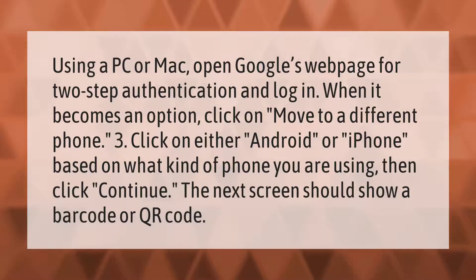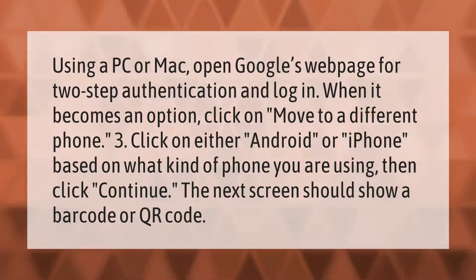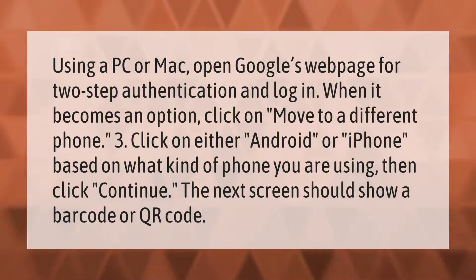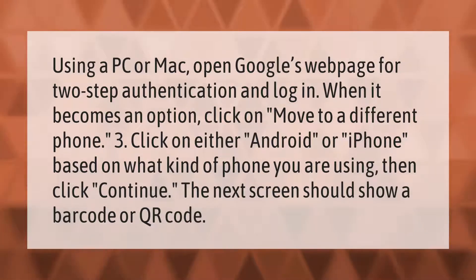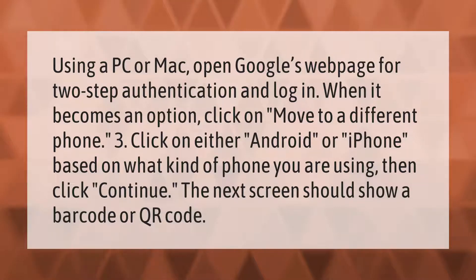Using a PC or Mac, open Google's web page for two-step authentication and log in. When it becomes an option, click on 'Move to a different phone.' Click on either Android or iPhone based on what kind of phone you are using, then click Continue. The next screen should show a barcode or QR code.